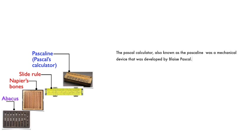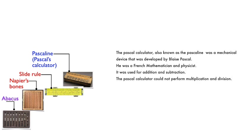The Pascal calculator, also known as the Pascaline, was a mechanical device developed by Blaise Pascal, a French mathematician and physicist. It was used for addition and subtraction. The Pascal calculator could not perform multiplication and division.